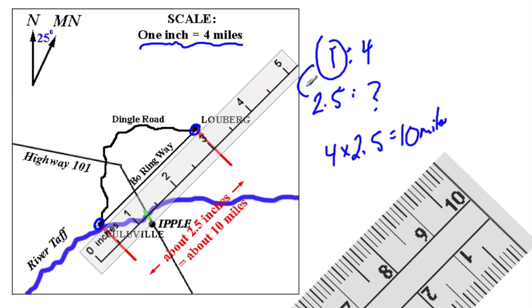The idea is that we've increased this amount by 2 and a half times, so we should also increase the distance by 2 and a half. And that's how far it is.